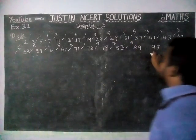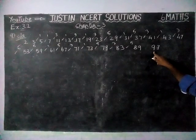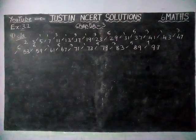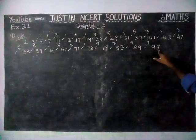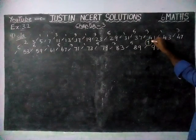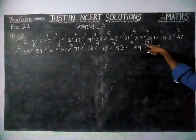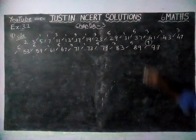Then 89 to 97: 90, 91, 92, 93, 94, 95, 96 — 7 numbers! So between 89 to 97, only we have consecutive 7 composite numbers. So this is the answer.